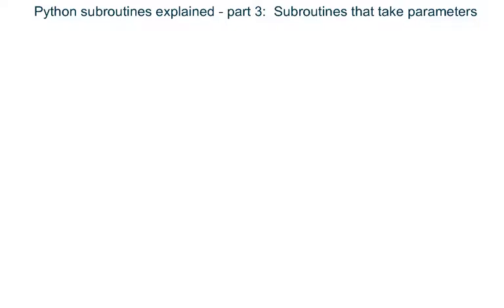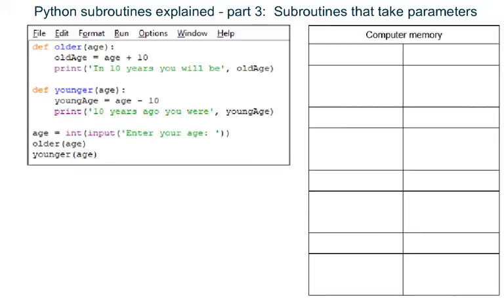Python Subroutines Explained Part 3: subroutines that take parameters. In the previous video, Subroutines Part 2, we looked at how data can be returned when a subroutine ends, so that the data can be used elsewhere in the program. In this video we are going to look at how we can send data to the start of a subroutine so that it can be used inside the subroutine.